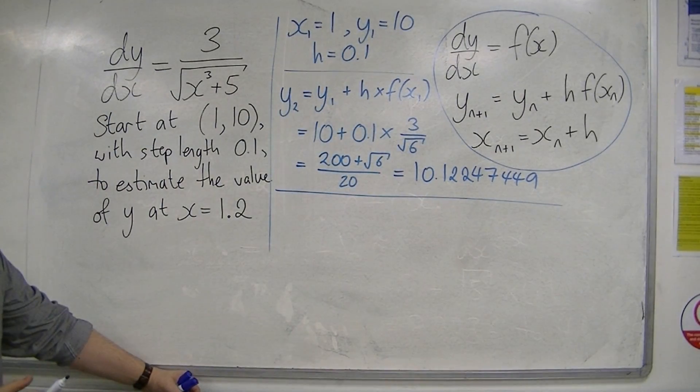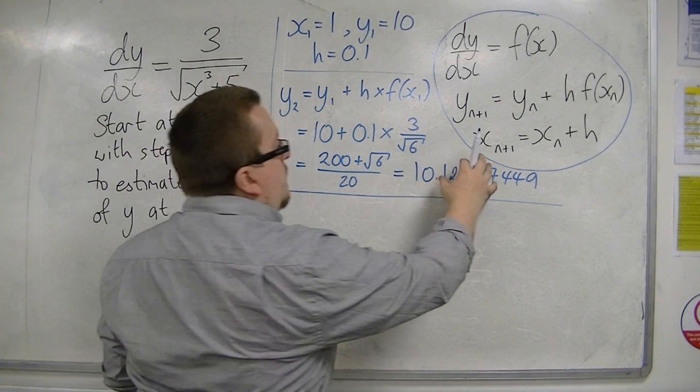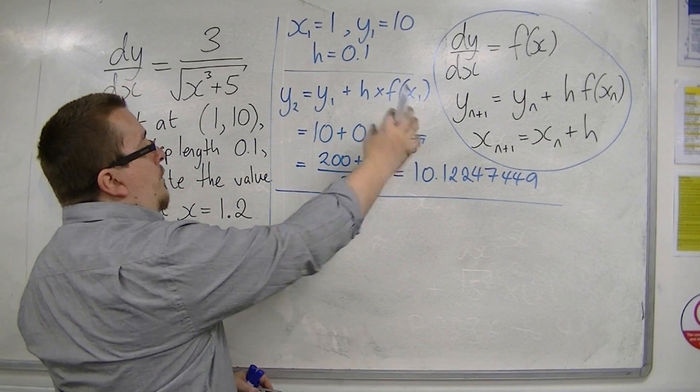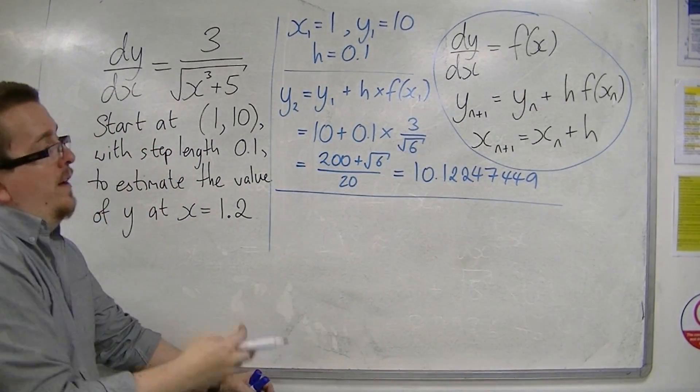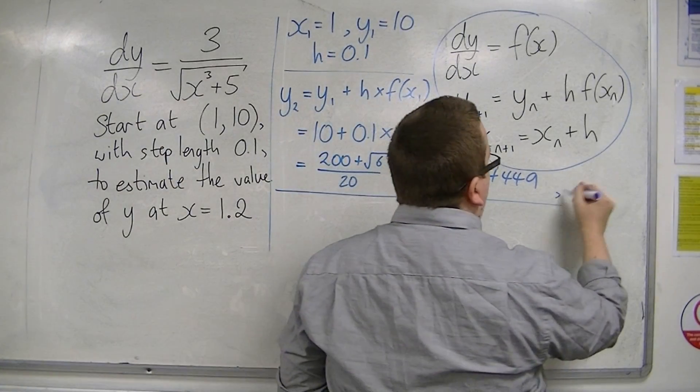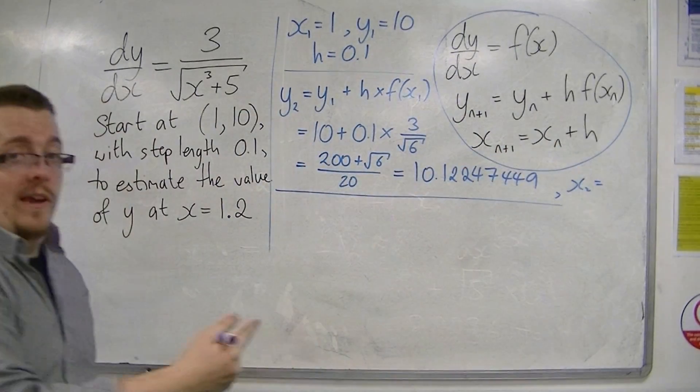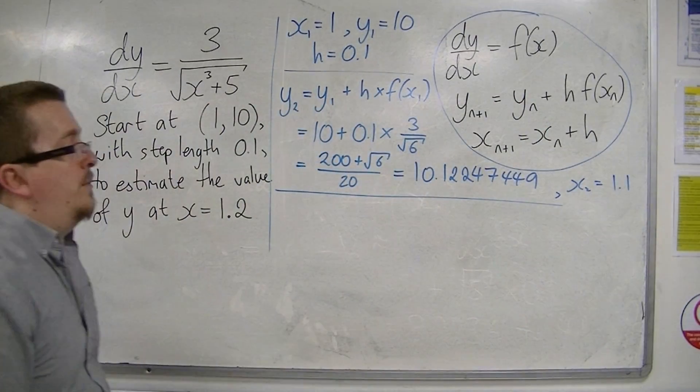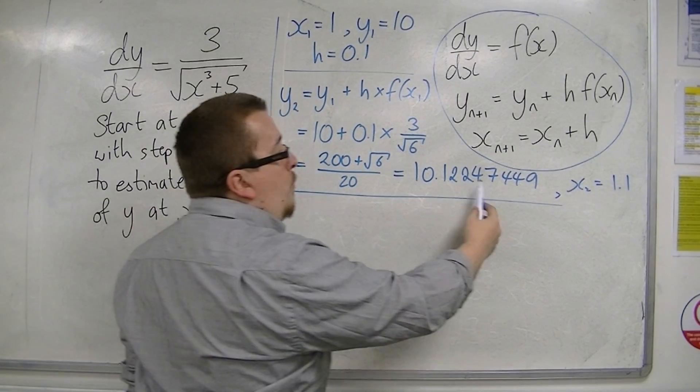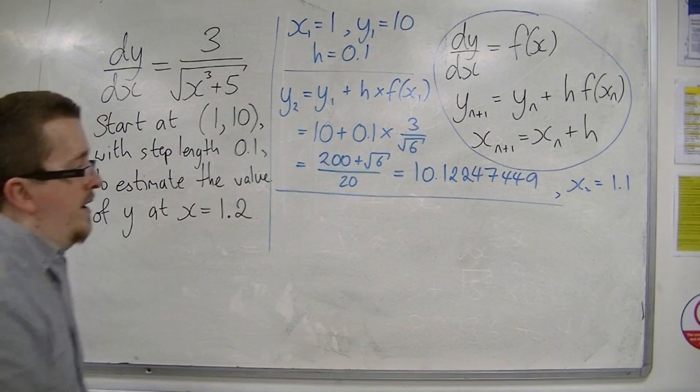So that is giving me the y-coordinate, the second y-coordinate. The second x-coordinate, x₂, is equal to x₁ plus h, so 1.1. So the coordinates of my second point are (1.1, 10.12247449).